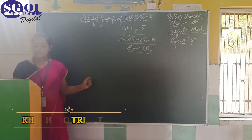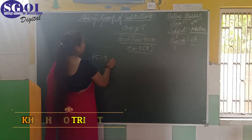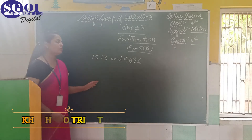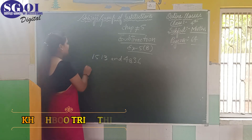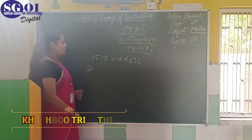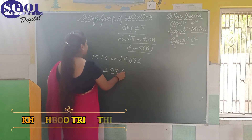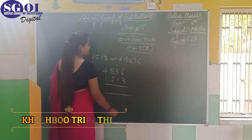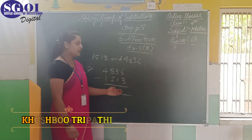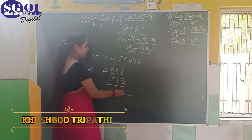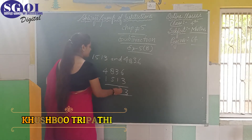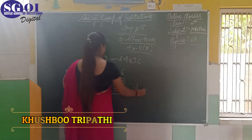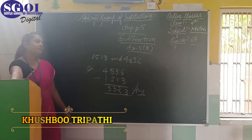For example, if you have 1513 and 4836, this shows how you can find the difference between these two numbers. You write the greater number first and the smaller number below. Always start to solve from the right side, the ones position. Subtract 3 from 6, you get 3. 1 from 3, you get 2. 5 from 8, you get 3. 1 from 4, you get 3. So the answer is 3323. This is the type of question we did in our previous class.